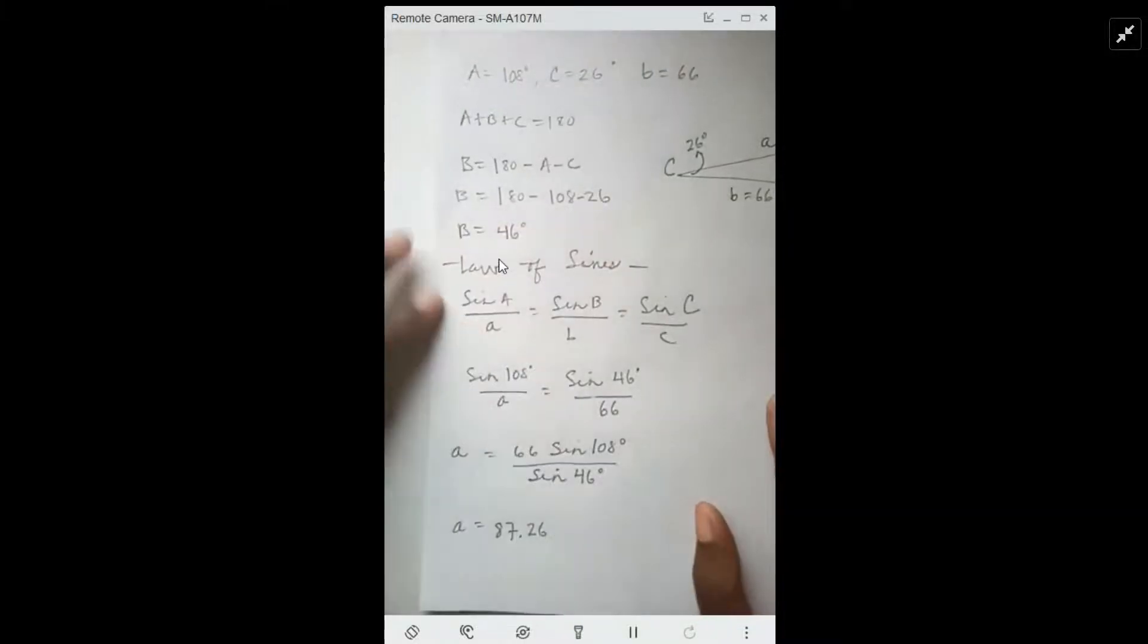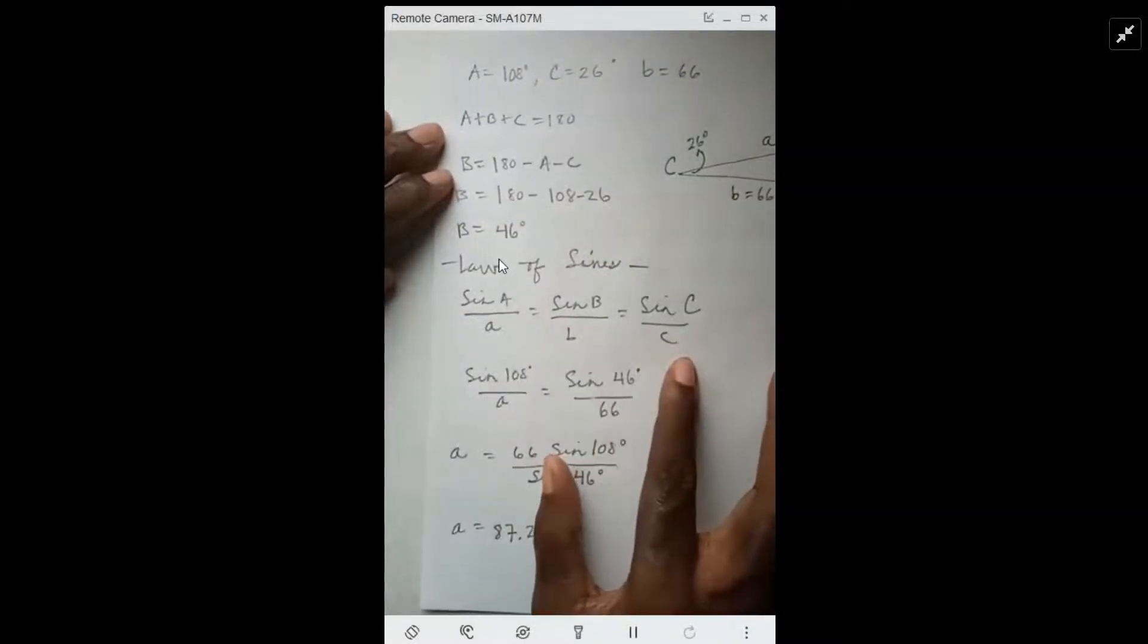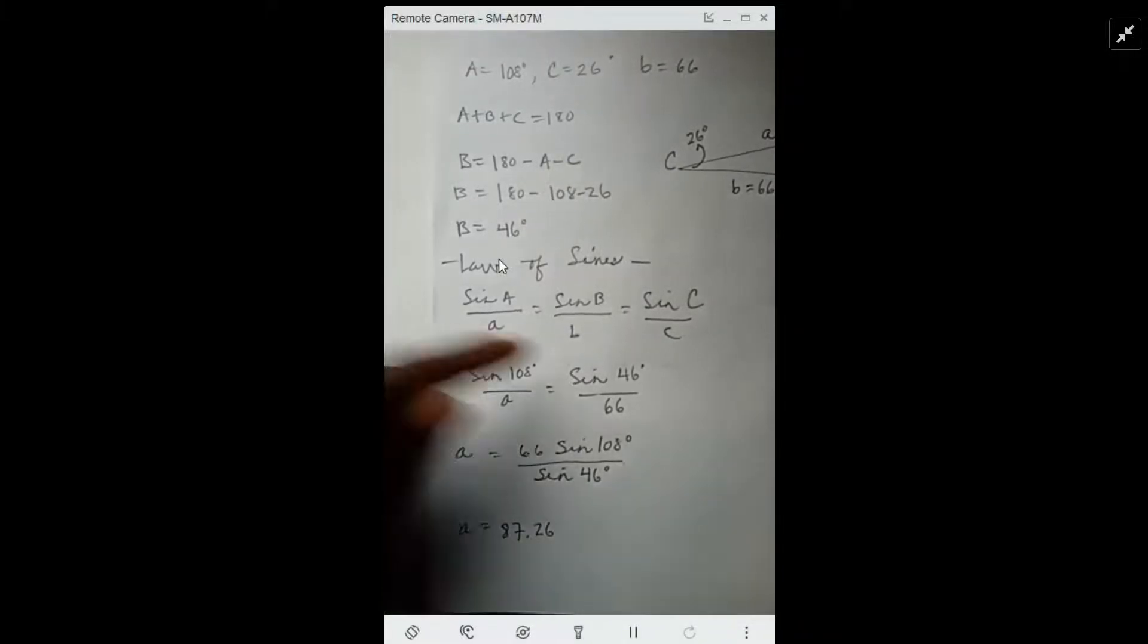So we wanted to find B so that we could use the law of sines. The law of sines is easier to use than the law of cosines. When you're given three values, you're always using the law of sines or the law of cosines. Here we have two ratios and we can plug in three to find the other unknown.